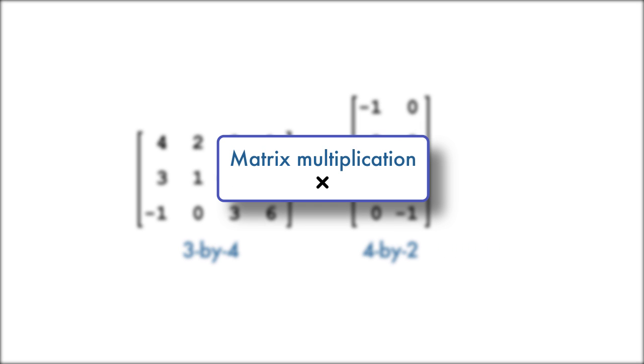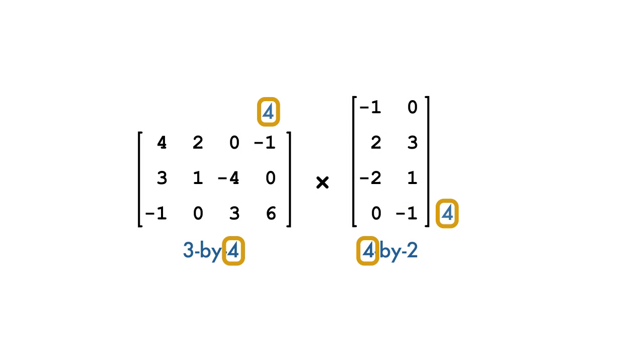Recall that, in mathematics, to multiply two arrays, such as a matrix and a vector, the number of columns of the left array must equal the number of rows of the right array.